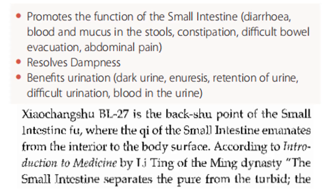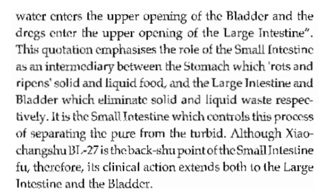Bladder 27 is the back-Shu point of the small intestine, where the Qi of the small intestine emanates from the interior to the body's surface. According to the Introduction to Medicine by Jing of the Ming Dynasty, the small intestine separates the pure from the turbid — water enters the upper opening of the bladder and the dregs enter the upper opening of the large intestine. This emphasizes the role of the small intestine as the intermediary between the stomach, which rots and ripens food, and the large intestine and bladder, which eliminate waste. Although Bladder 27 is the back-Shu point of the small intestine, its clinical action extends both to the large intestine and the bladder.